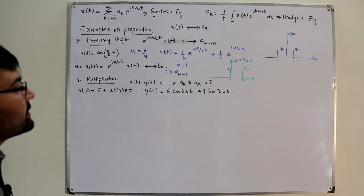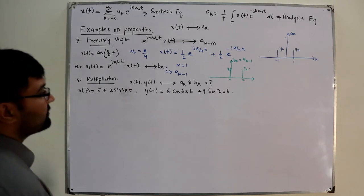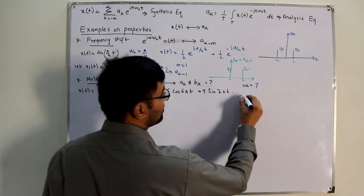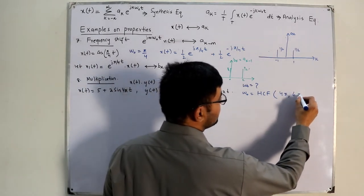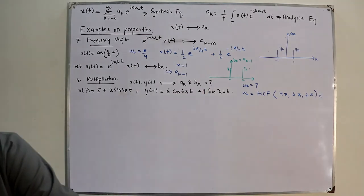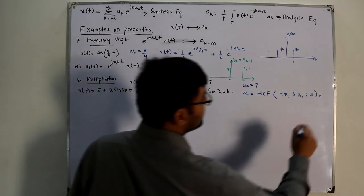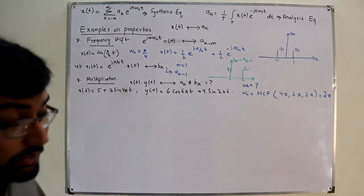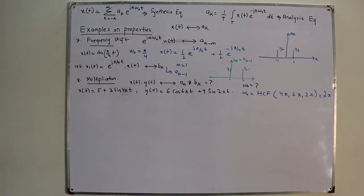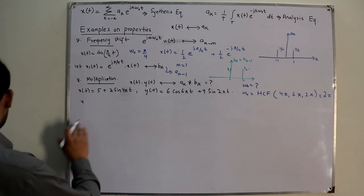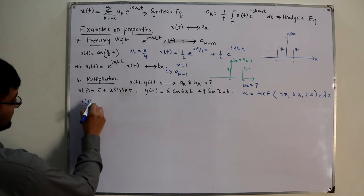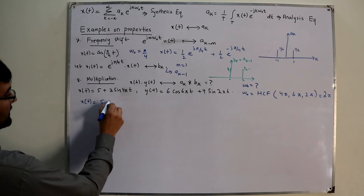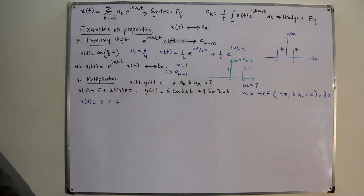To find the Fourier coefficients of x(t)·y(t), we first calculate the fundamental frequency ω₀ = HCF(4π, 6π, 2π) = 2π. Now we expand x(t): writing 2·sine(4πt) using Euler's formula gives (2/(2j))·e^(j4πt) - (2/(2j))·e^(-j4πt).